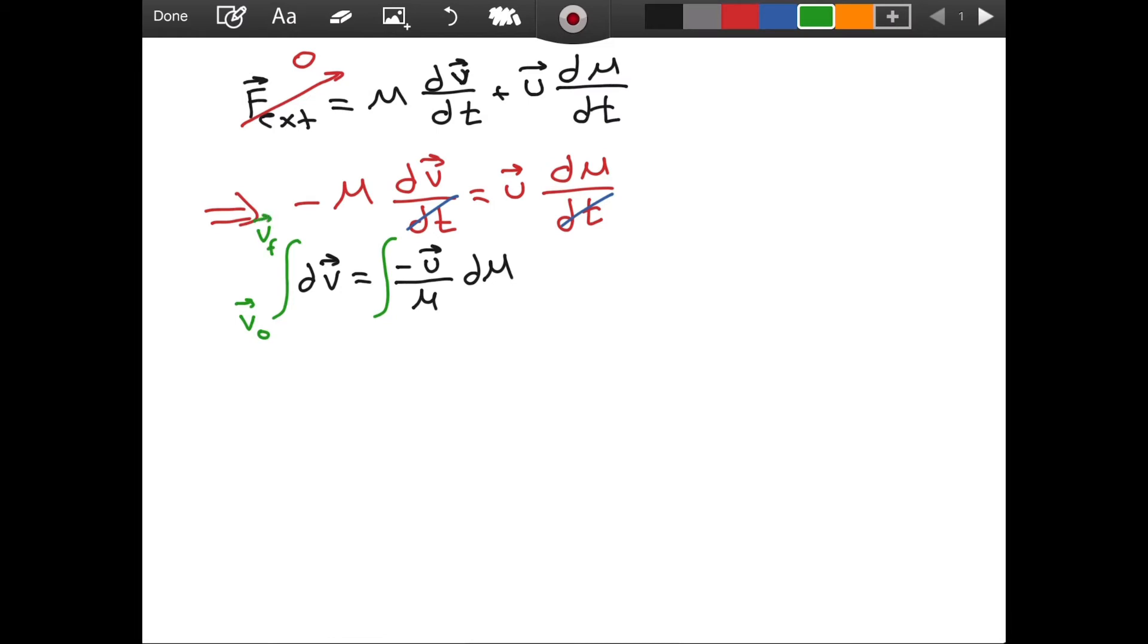And actually, Vf is what we are trying to find. When you have a rocket, you are probably interested in its speed after burning some amount of mass, some amount of fuel, actually. So after losing some amount of mass, Vf is what we are trying to solve for, the final velocity.